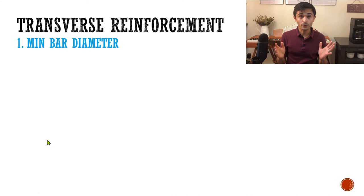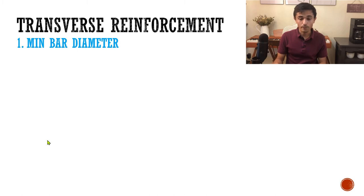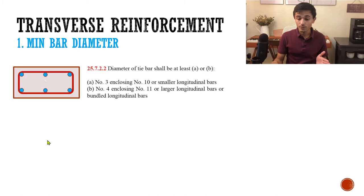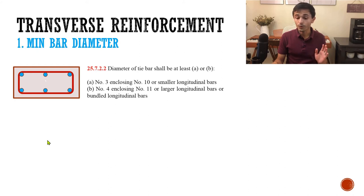Those were the rules for the longitudinal reinforcement. How about the ties — the transverse reinforcement? The first basic rule is the minimum bar diameter, which depends on the diameter of your longitudinal rebars. If they are number 10 or smaller, use number 3 ties. If they are number 11 or larger, or if the rebars are bundled — where two bars are used as one to get more steel — you'll use number 4 ties.